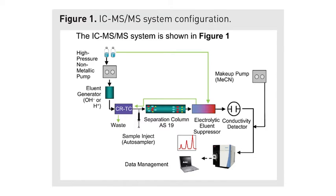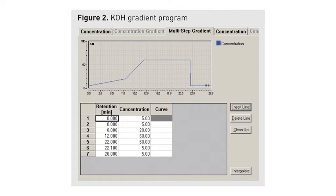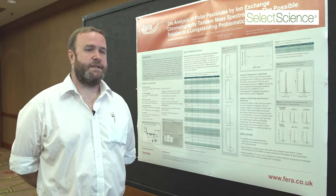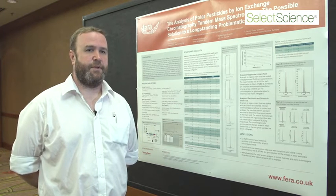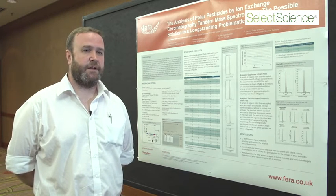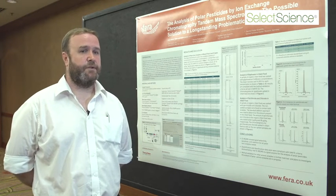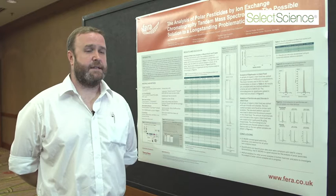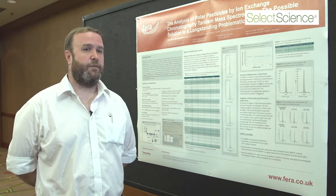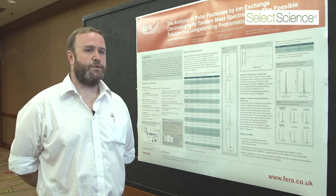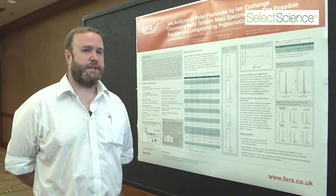Figure one shows the basic system configuration, and figure two shows the IC gradient profile method. Looking at the validation results, we're validating at 10, 50, and 100 ppb (micrograms per kilogram) for most of the commodities and most of the components. We have 13 pesticides and contaminants in the mix and we're achieving very good recoveries and relative standard deviations for both wheat samples and grape samples.